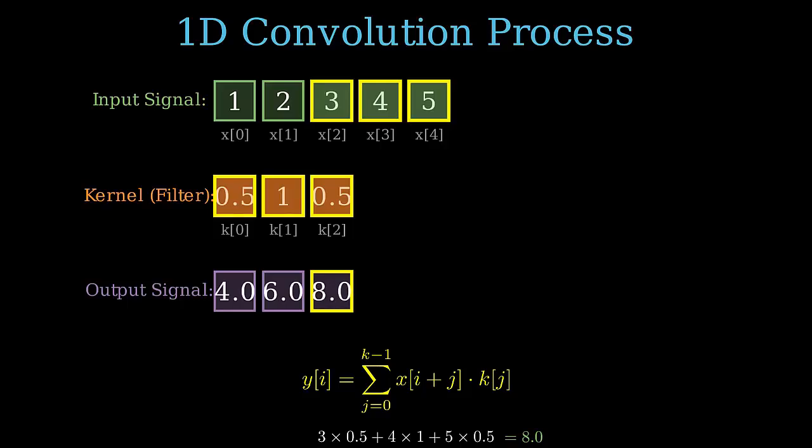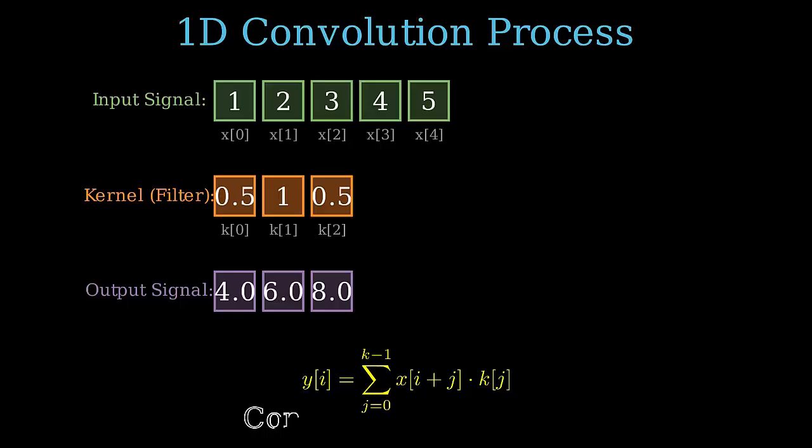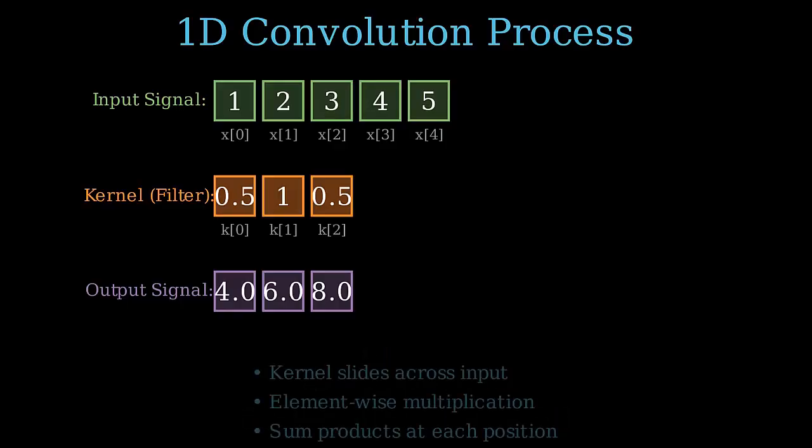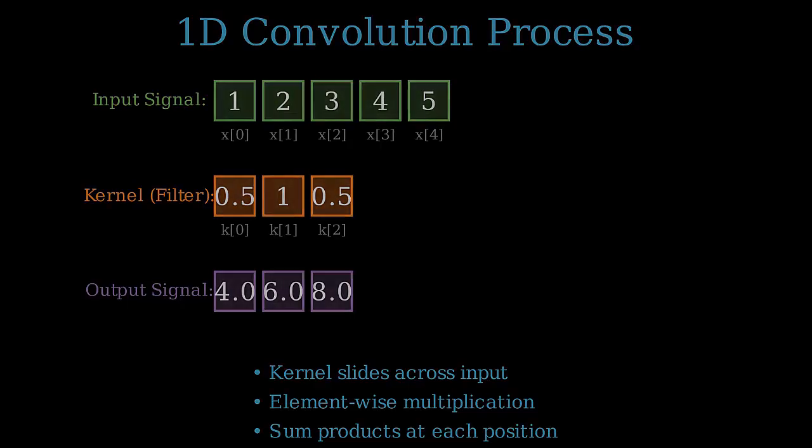Final step. The kernel slides to cover the last three inputs, which are 3, 4, and 5. 3 times 0.5 plus 4 times 1 plus 5 times 0.5. The final output is 7.0. Convolution is complete. In summary, 1D convolution automatically filters your time series data by sliding a learned kernel, performing element-wise multiplication, and summing the products to extract meaningful local patterns.